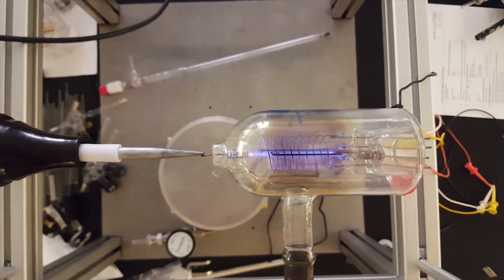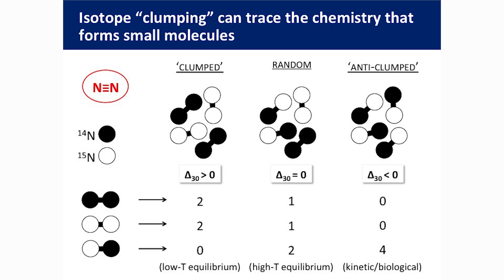We've developed a new technique to be able to do this. It's based on these very rare versions of different atoms. Nitrogen has two of them — one that has a mass of 14 atomic mass units and one that has a mass of 15. When you bind the two mass-15 ones together, you get a ¹⁵N-¹⁵N molecule. We're looking at the abundances of these within our atmosphere and also coming from different processes.